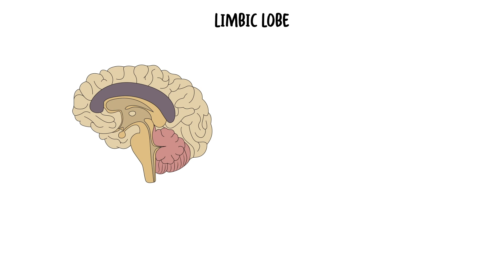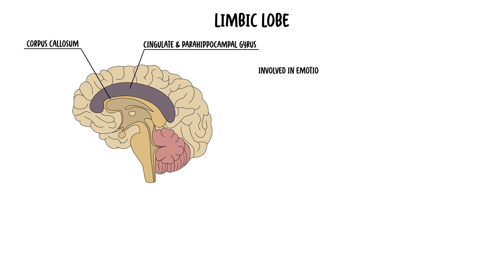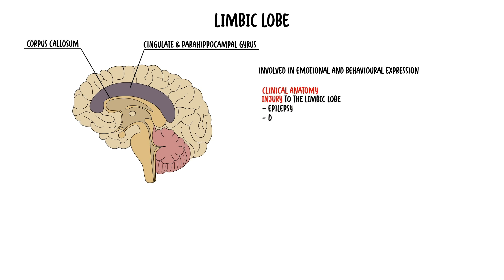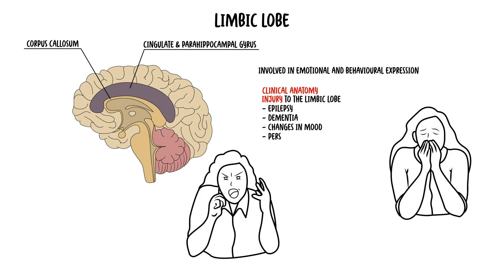The last lobe is the limbic lobe. It is located on the medial part of each hemisphere and surrounds the corpus callosum. It is a component of the larger limbic system, meaning it is involved with emotional and behavioural expression. In particular, the limbic lobe contains areas concerned with the modulation of emotions, visceral and autonomic functions, learning and memory. Injury to the limbic lobe can result in epilepsy, dementia, changes in mood, personality or impulse control, psychiatric disorders, disorders of the endocrine system, and aphasia.